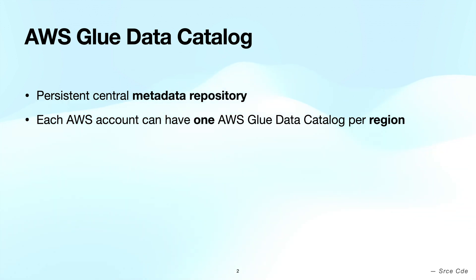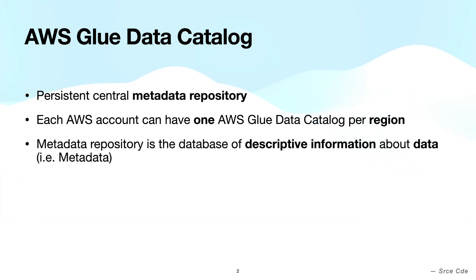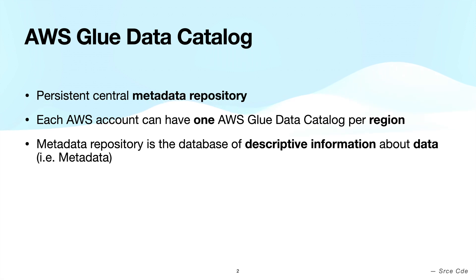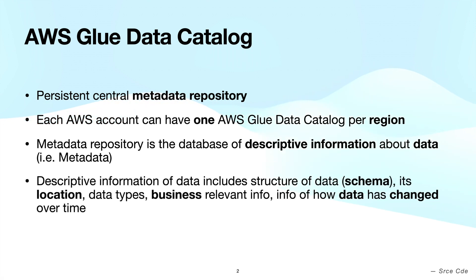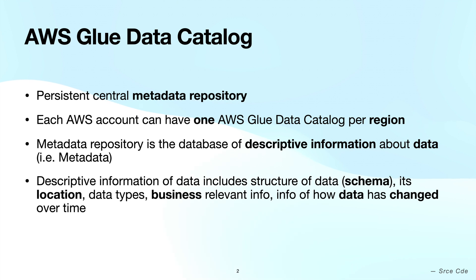Since we know that AWS Glue Data Catalog is the metadata repository, let's try to understand what exactly a metadata repository is. A metadata repository is the database of descriptive information about underlying data. That data might be sitting in S3 or at any other location. The descriptive information or metadata includes schema structure, physical location, data types, and track of how data has changed over time, along with other statistics.